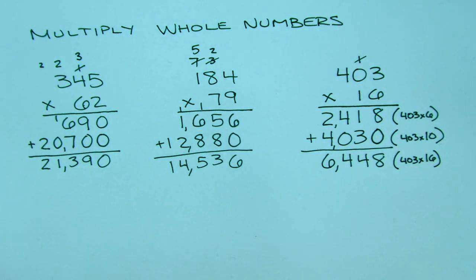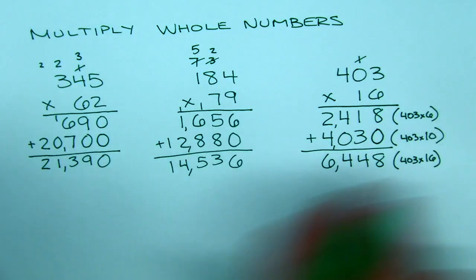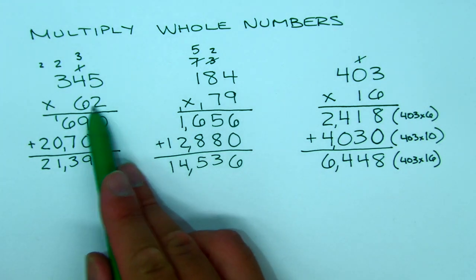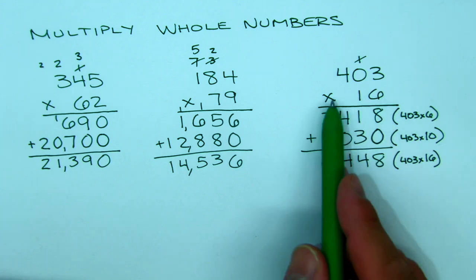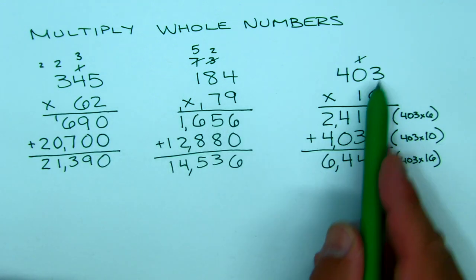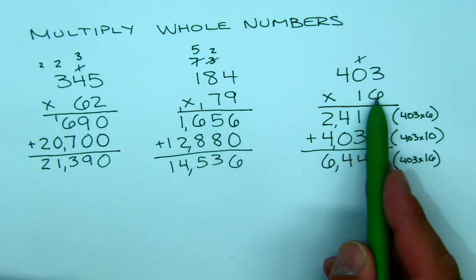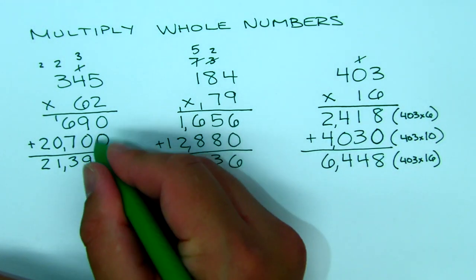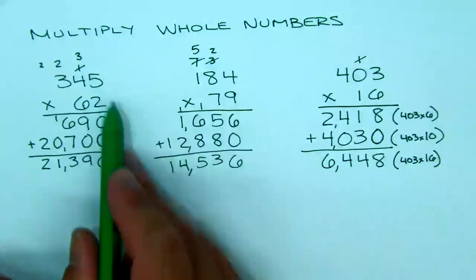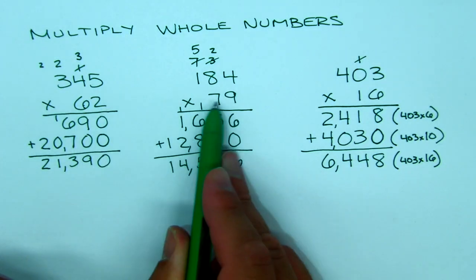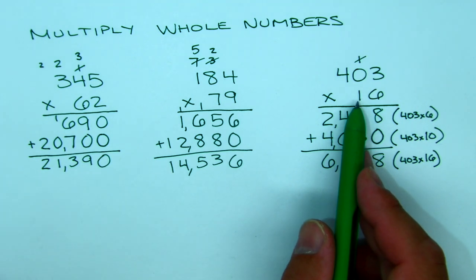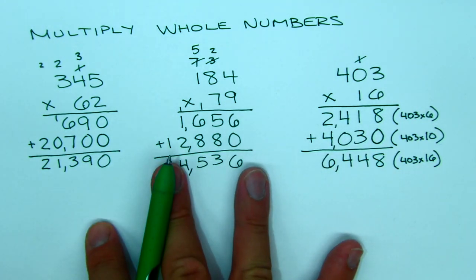A couple of tips that apply to any problem: the big thing is to always start in the lower right — not calling it the ones place because once we get to decimals that won't be true, so just: start lower right. And don't forget to add the placeholder zero, because that gives the digit in the tens place the power of 10, since place values go by 10.